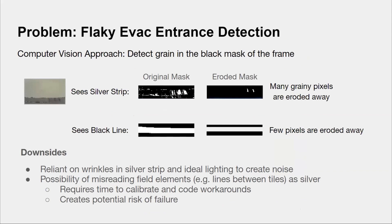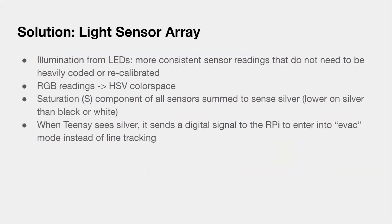So for Nationals, we use the camera to detect the evac entrance by detecting the gray in the black mask of the frame. However, this is relying on the wrinkles in the silver strip and certain ideal lighting to create noise. It could also cause the robot to enter evac mode if poorly calibrated, as it may misread field elements, such as the lines between tiles as silver, creating a potential risk of failure. We solved this by using our light sensor array. The consistent illumination from the LEDs creates more consistent sensor readings that do not need to be heavily tuned or recalibrated. We converted the RGB readings into HSV and used the sum saturation component of all sensors to sense silver. The Teensy will send a digital signal to the RPi to enter the evac zone and stop line tracking when it sees silver.